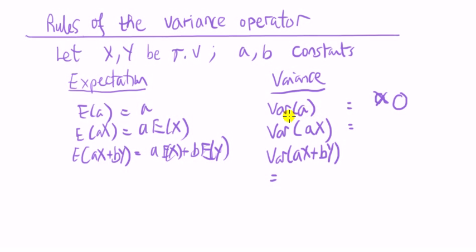Intuitively why? Does a constant vary? No, a constant, as the name suggests, is fixed, it's constant, so there's no variability in a constant, so the variance of a constant is zero.